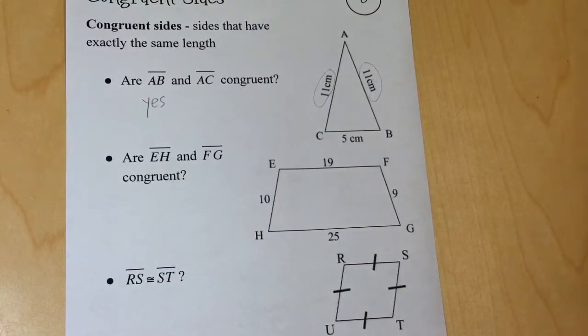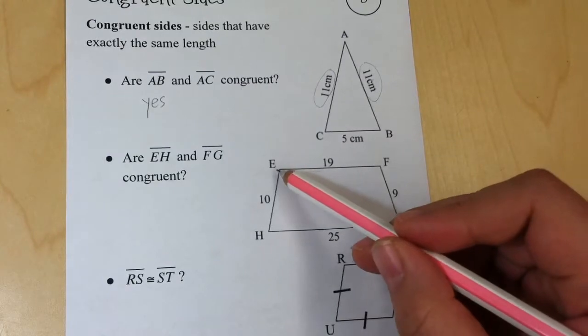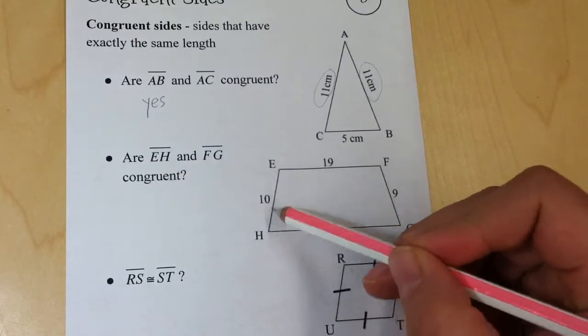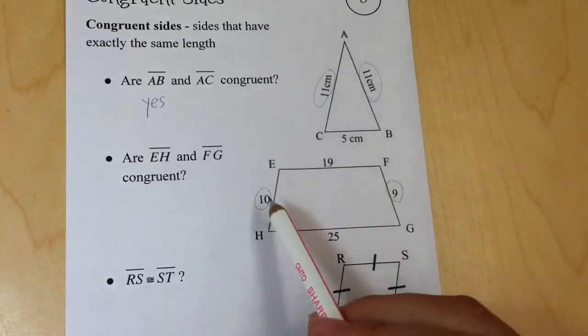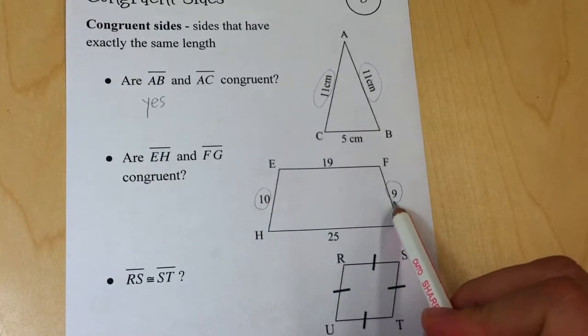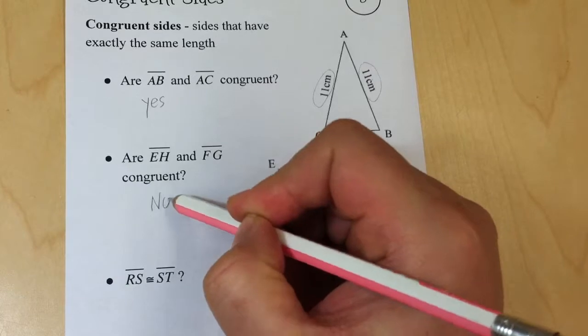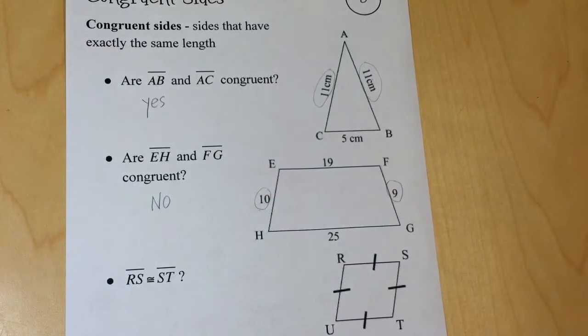Next, EH and FG. In this figure, EH is here, FG is here. Is 10 equal to 9? No, they are not equal, so the sides are not congruent.